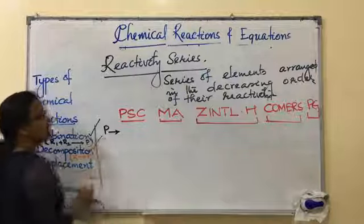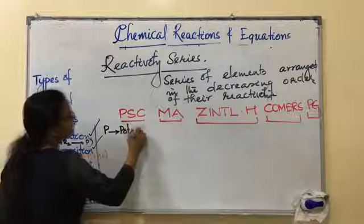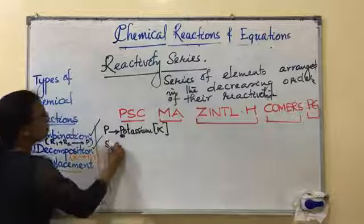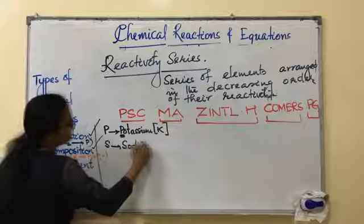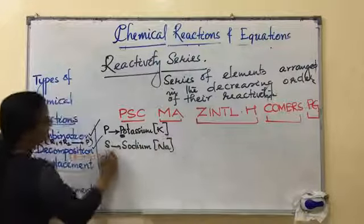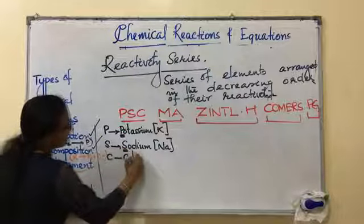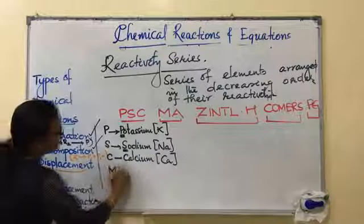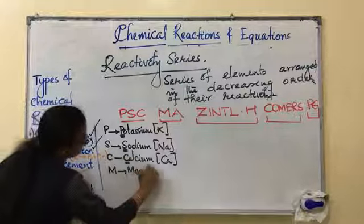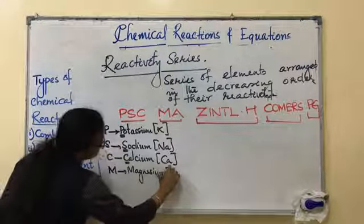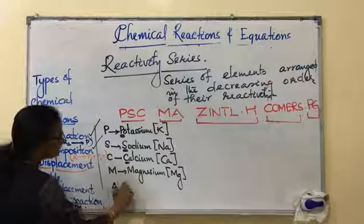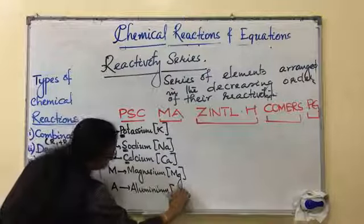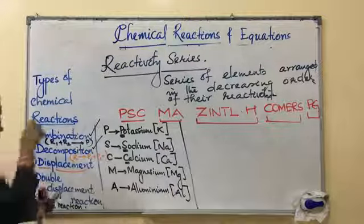So what is this P stands for? P stands for potassium. Its symbol is K. S stands for sodium, it is Na. C stands for calcium, not carbon. Carbon is a non-metal. Ca. M stands for magnesium, it is Mg. A stands for aluminum, it is Al. So PSC MA.